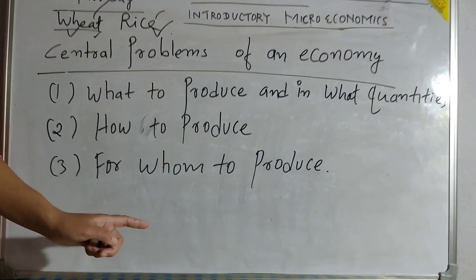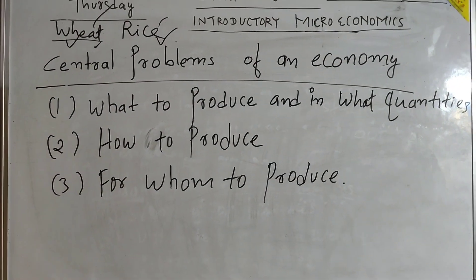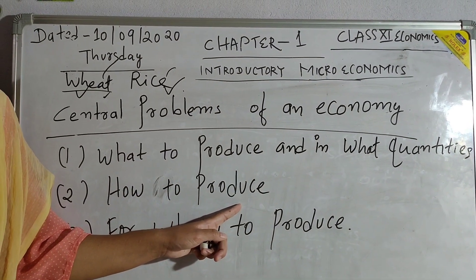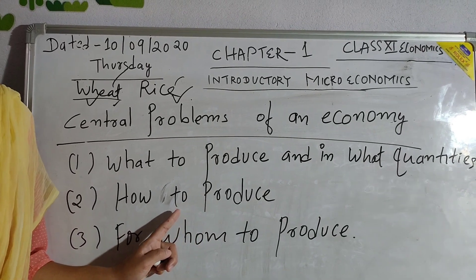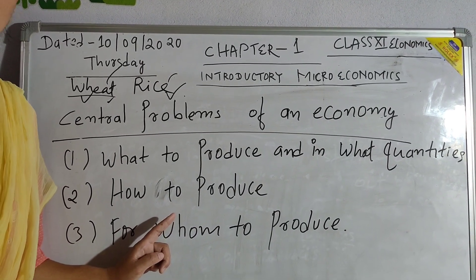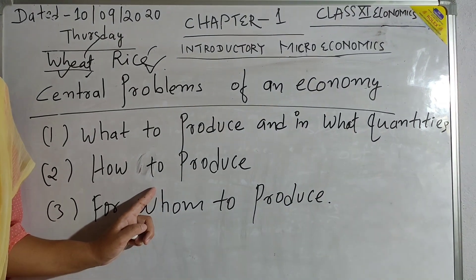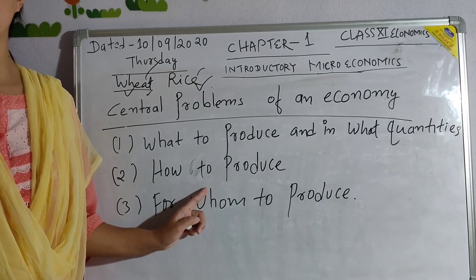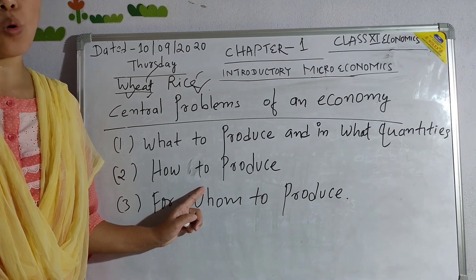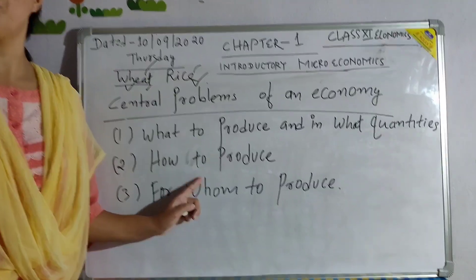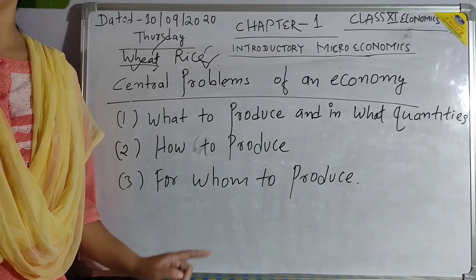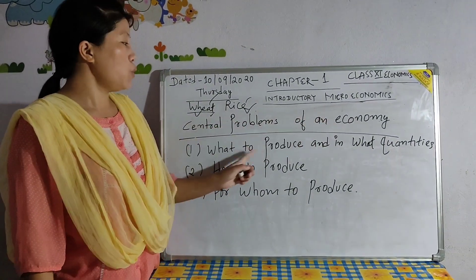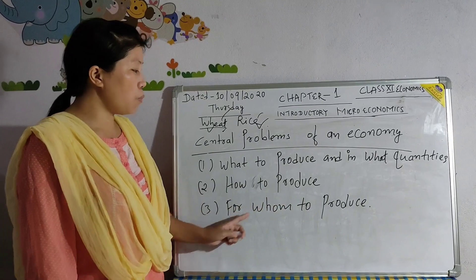The third central problem is for whom to produce. This is the question of how to distribute the product among various sections of society. The total output ultimately flows to households in the form of income — in the form of wages, salaries, interest, etc. There are millions of people in society, and each one cannot get sufficient income to satisfy all their wants. This raises the problem of distribution of national product among different households.